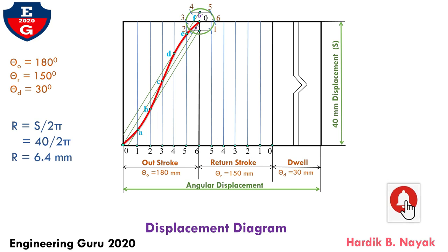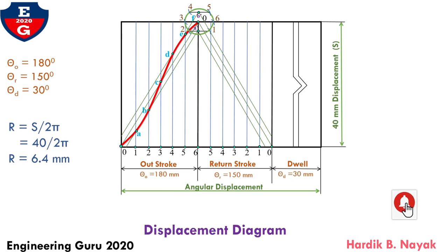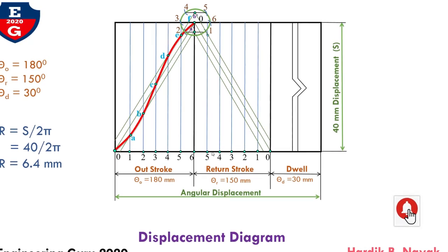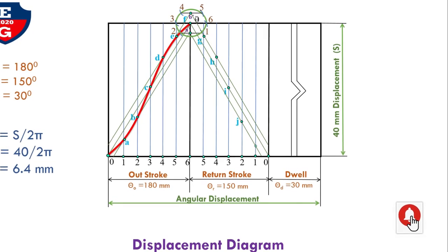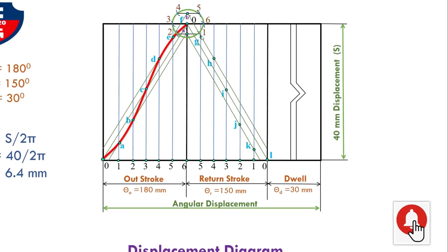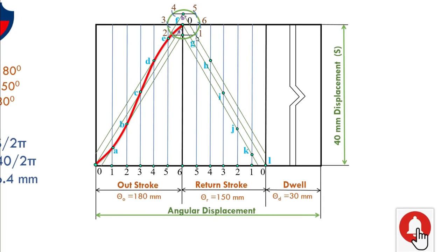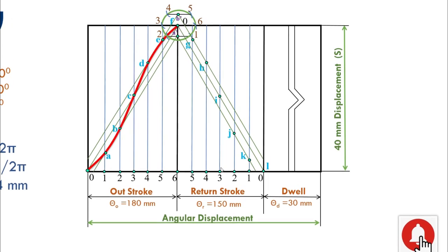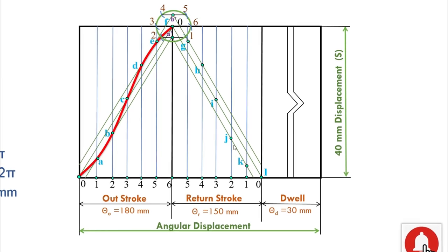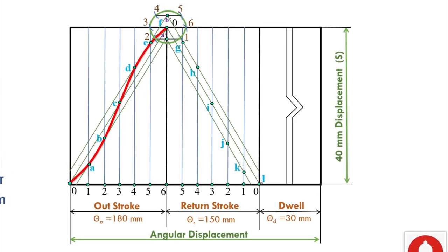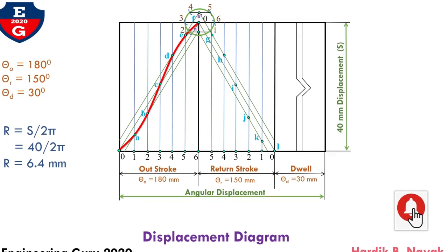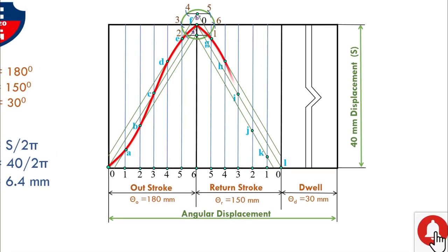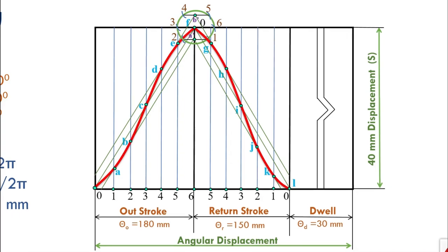During the return stroke, to plot the points, first draw a diagonal from point F to end point 0, then draw parallel lines passing through points A' and B'. The 5th division vertical line intersects here to give point G, the 4th division gives point H, 3rd division gives point I, 2nd division gives point J, 1st division gives point K, and the final point is L. After getting all these points, connect them with a smooth curve indicating the return stroke motion.